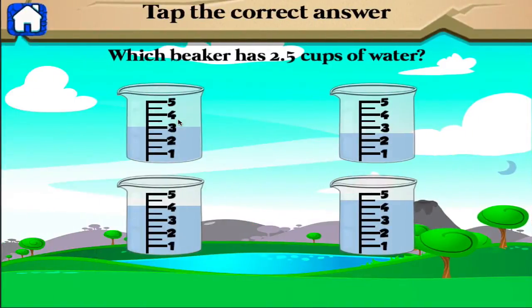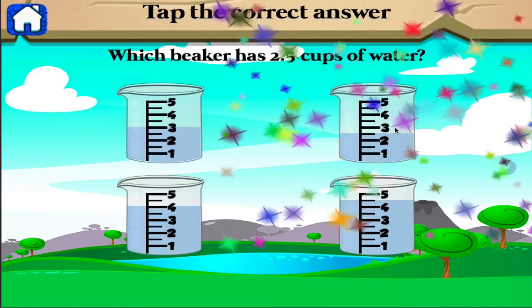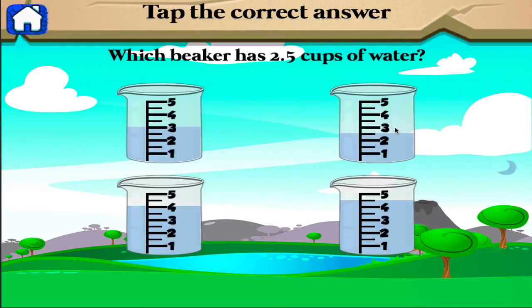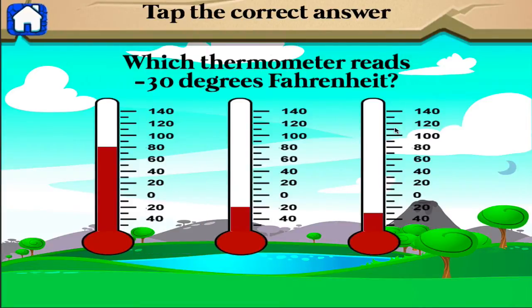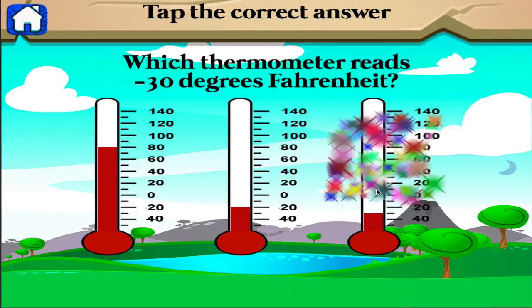Which beaker has two point five cups of water? Good work! Which thermometer reads negative thirty degrees Fahrenheit?